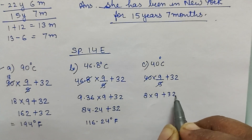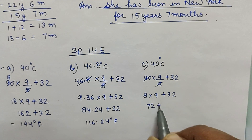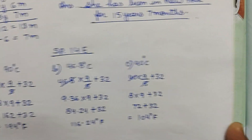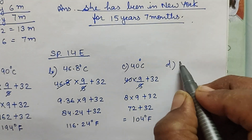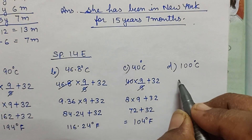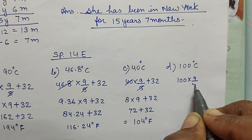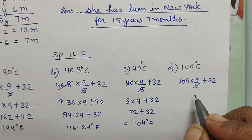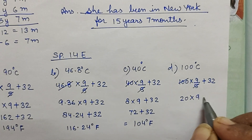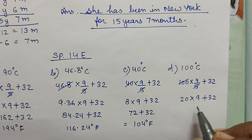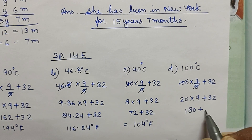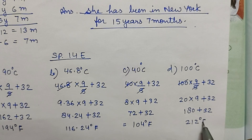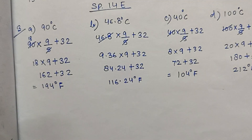Part C: 40 degree Celsius to Fahrenheit. 40 into 9/5 plus 32. 5 से reduce करेंगे आएगा 8. 8 into 9 is 72. 72 plus 32 is equal to 104 degree Fahrenheit. Part D: 100 degree Celsius. 100 into 9/5 plus 32. 5 से reduce करेंगे आएगा 20. 20 into 9 is 180. 180 plus 32 is 212 degree Fahrenheit.